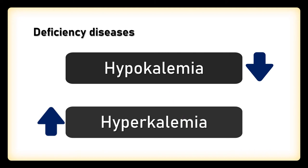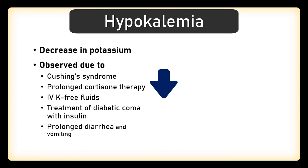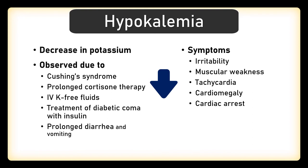Let's see hypokalemia first. It is observed due to overactivity of the adrenal gland, recognized as Cushing syndrome, prolonged cortisone therapy, IV administration of potassium-free fluids, treatment of diabetic coma with insulin, and prolonged diarrhea and vomiting. The symptoms are irritability, muscular weakness, tachycardia, cardiomegaly, and cardiac arrest. There are changes in the ECG of a hypokalemic patient — the T wave gets inverted and also flattened.